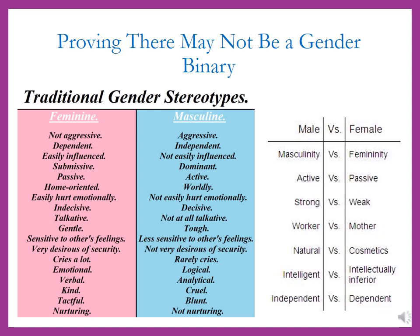Every time I discuss the gender binary in my classes, I do a little experiment with my students, and every single time we get basically the same results. I ask them to come up with a list of all the traits of someone who is stereotypically feminine, and then come up with a list of all the traits of someone who is stereotypically masculine — what society and the media tell you you need to do to be a manly man versus a womanly woman. For feminine, they typically say: passive, dependent, easily influenced and submissive, home-oriented, nurturing, easily hurt emotionally, irrational, indecisive, talkative, gentle and sensitive, more desirous of security, crying a lot, verbal and kind.